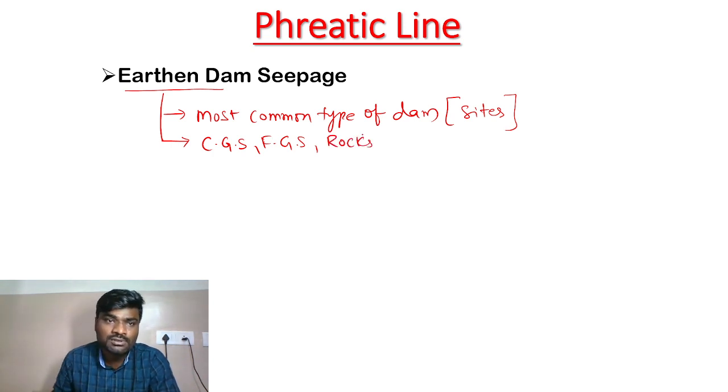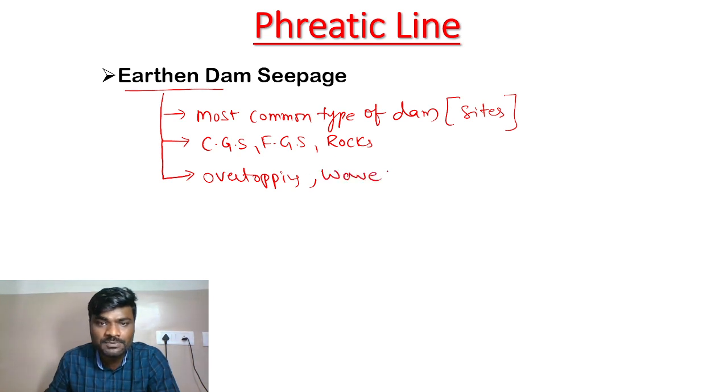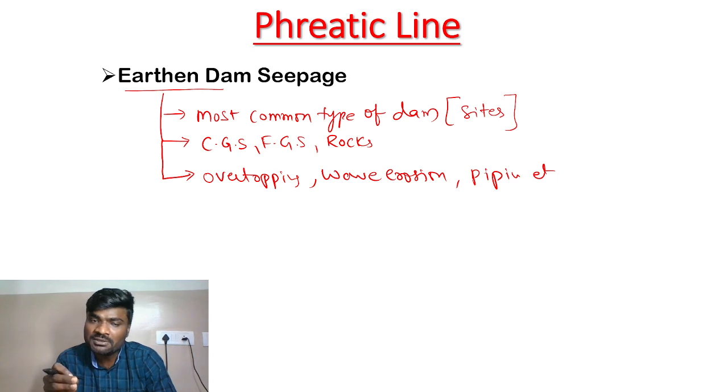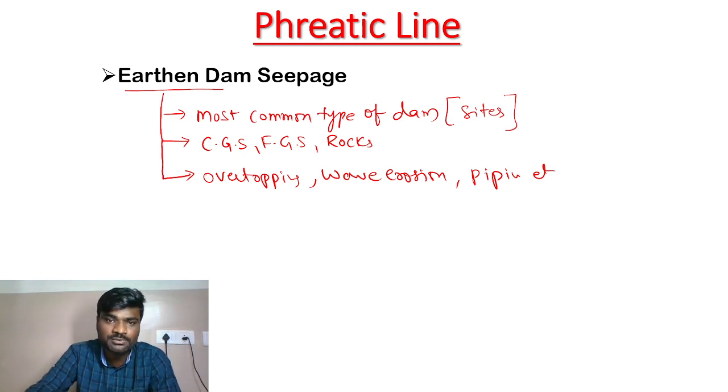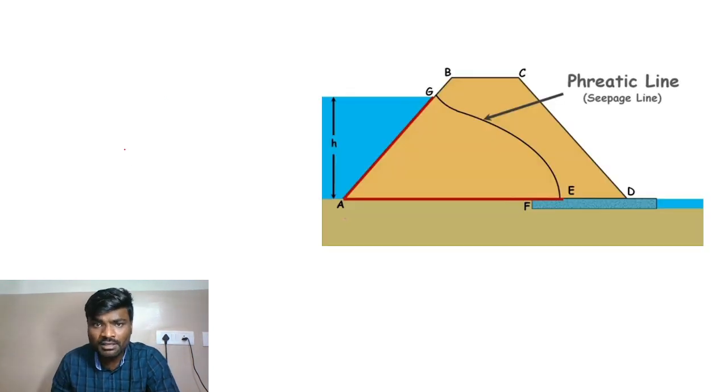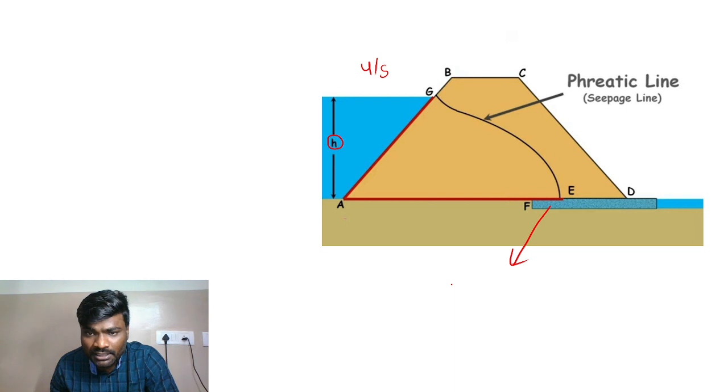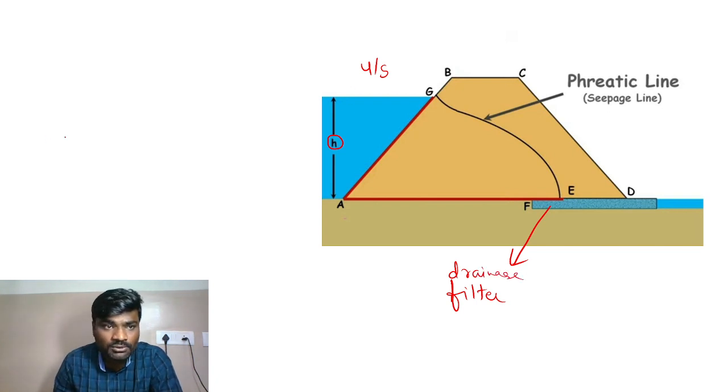In earth dams, there are different types of failures including overtopping, wave erosion of upstream, and piping. Different reasons cause these failures, but from an exam point of view, piping failure related to seepage is what we'll focus on. This knowledge is important for GT subject topics like filter and drainage.